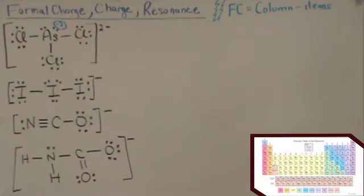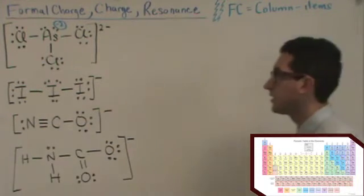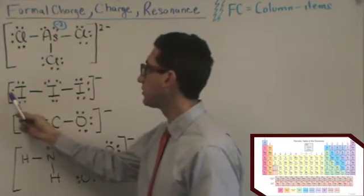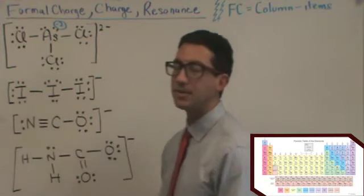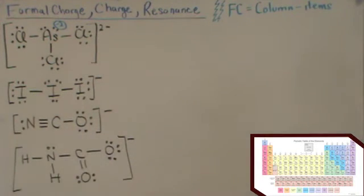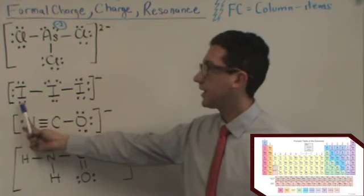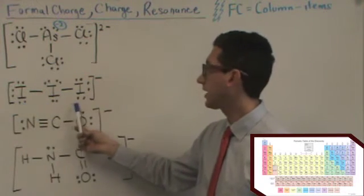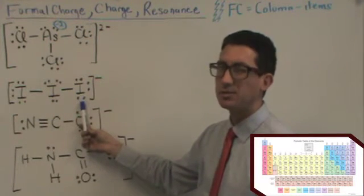Okay, iodine's in column 7. We've got 3 iodines here. Count the first one. 1, 2, 3, 4, 5, 6, 7 items around it. It's in column 7. So, this iodine will have a zero formal charge. Likewise, this one's identical. It'll have a zero formal charge.